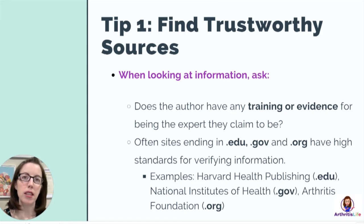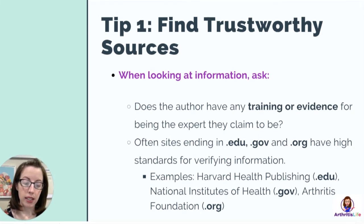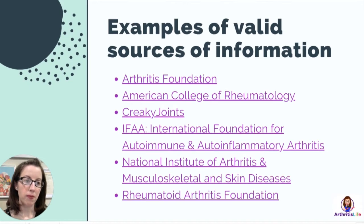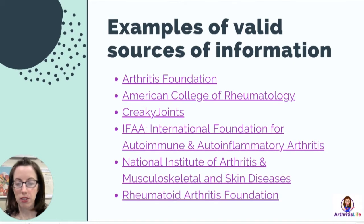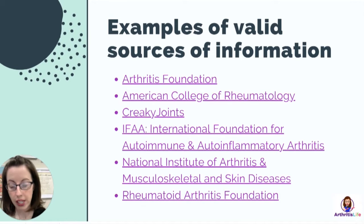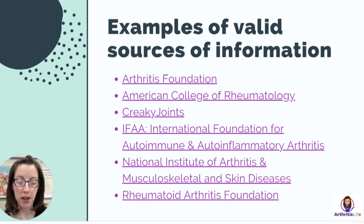For example, Harvard Health Publishing has a great article about RA — that's a .edu website. The National Institutes of Health is a .gov in the US. Then there's the Arthritis Foundation at arthritis.org. Other valid sources include the American College of Rheumatology — the professional organization for rheumatologists — Creaky Joints, and IFAA, which was started by a patient. The National Institute of Arthritis and Musculoskeletal and Skin Diseases is also a great starting point.